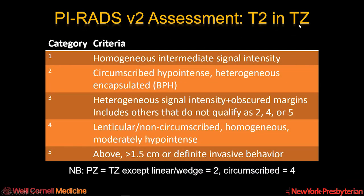Assessment of T2-weighted imaging in the transition zone is also straightforward. When the transition zone is homogeneously intermediate signal intensity, this is category 1. A circumscribed or encapsulated nodule is category 2. A lesion with obscured margin or those that do not qualify for other categories is category 3. Lenticular lesions and those which are non-circumscribed with homogeneously moderately hypointense signal are category 4. Any category 4 lesion which is invasive or greater than 1.5 centimeters would be category 5.